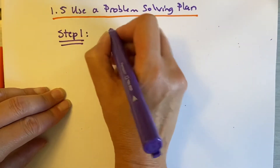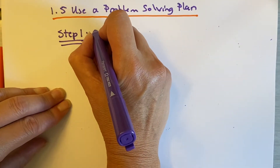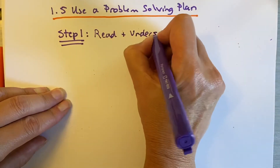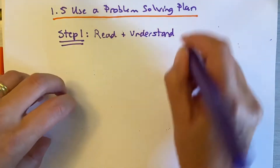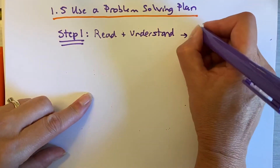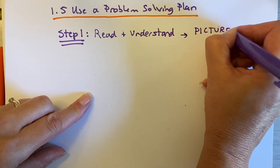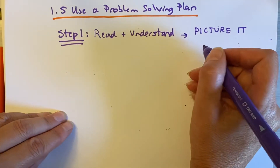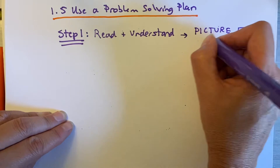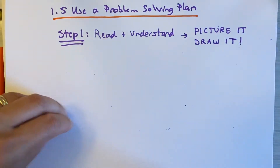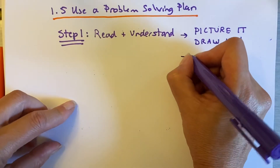I will underline step one a hundred times: the key to solving a word problem is to read and understand. If you can read and understand a word problem, you will get through it. To read and understand it, you have to picture it. You've got to draw it — and I don't mean just picture it in your head, I actually mean draw it. Sometimes the book gives you drawings, but if it doesn't, you draw it.